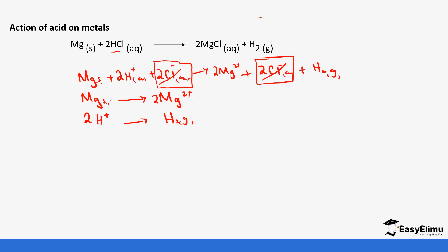For magnesium to move from solid state to an ion, since magnesium is a metal, it reacts by losing electrons. For magnesium to go from magnesium solid to magnesium ions, it has lost two electrons. Because we have two magnesium atoms it is four electrons total, but the key point is that magnesium has lost electrons. From our definition — oxidation is loss — this tells us magnesium has undergone oxidation. And the compound that undergoes oxidation is the reducing agent.